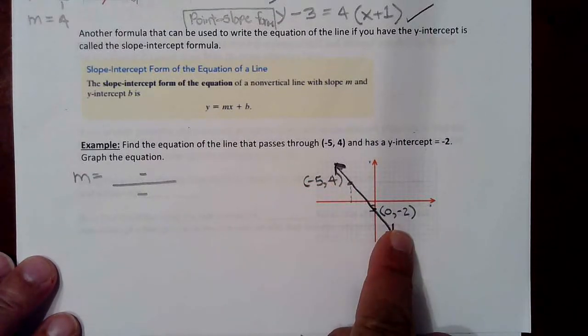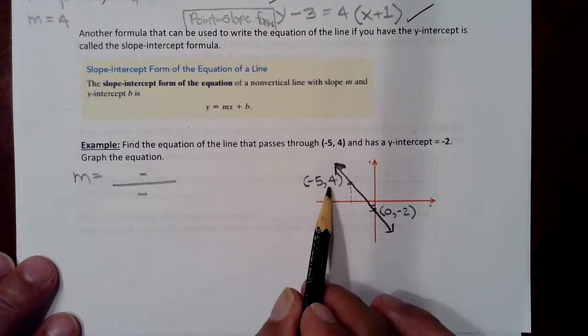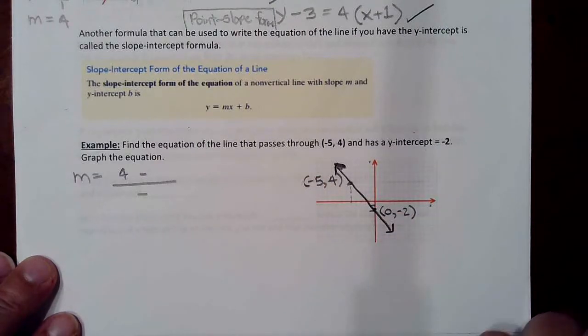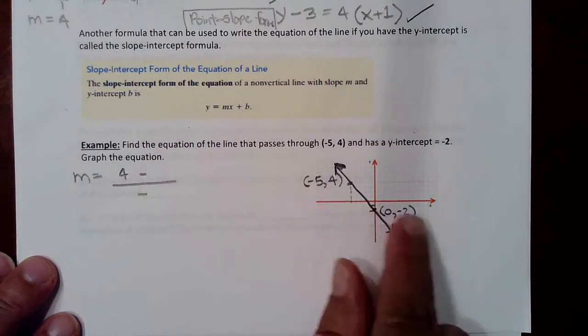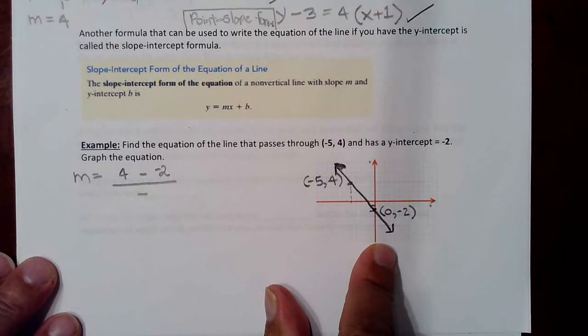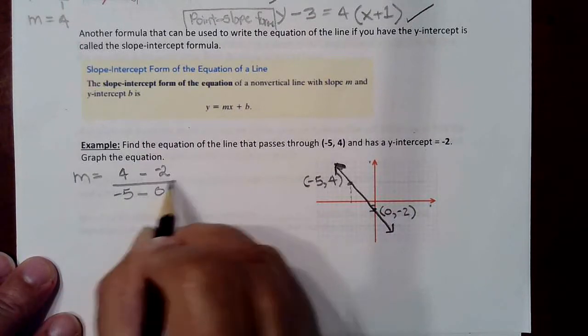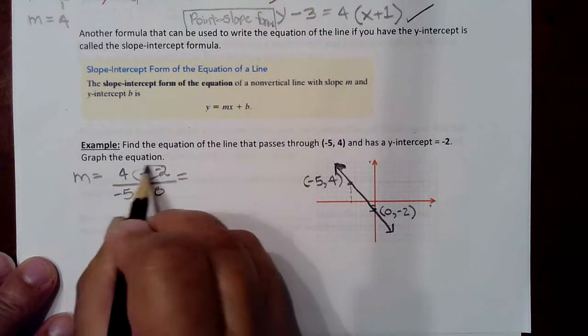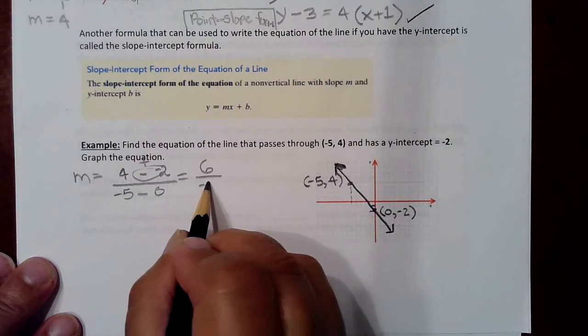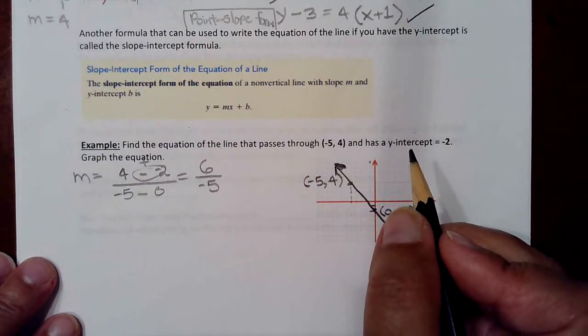I'm going to go from these numbers to these numbers. Y's on top. So the y's are 4 and negative 2, but you can always try going from here to here to see that you get the same answer. So y's are 4 and negative 2. X's moving in the same direction are negative 5 and 0. So this would be 4 plus 2, which is 6. Negative 5 take away nothing is negative 5. So we have a slope of negative 6 fifths.